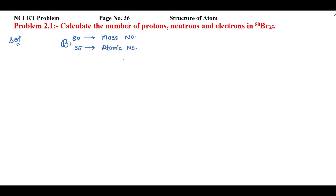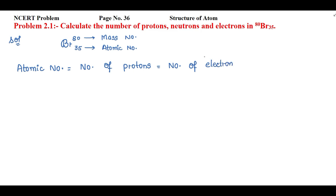The atomic number represents the number of protons, and also the number of electrons in a neutral atom. If I am having a neutral atom — meaning if the atom does not have any negative or positive charge — then the atomic number represents both the number of protons and the number of electrons.